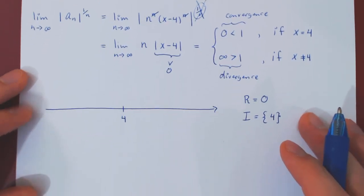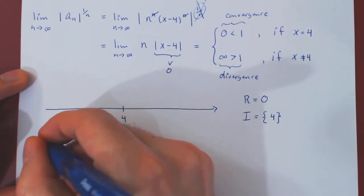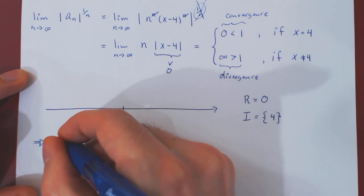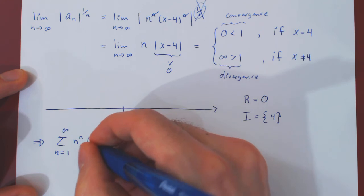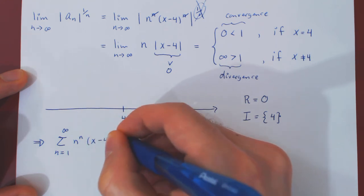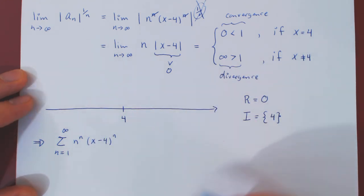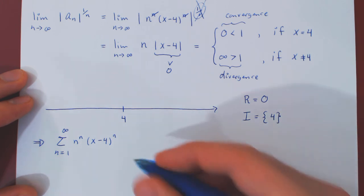So if you write a conclusion, the given power series only converges if x equals 4.